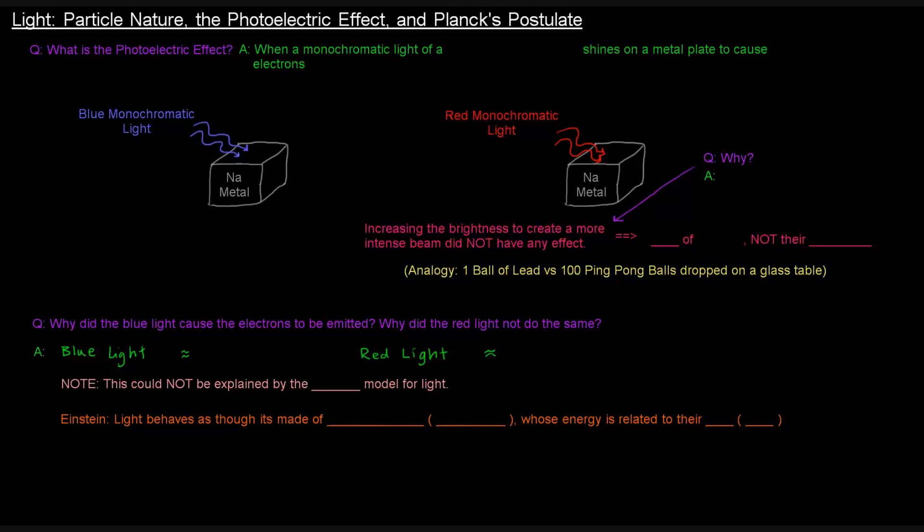What happens? When we shine the blue monochromatic light, what ends up happening is that electrons sort of fly off of this metal. Electrons are emitted. But when the red monochromatic light is shined on the metal, no electrons are emitted. And even if the brightness of the red monochromatic light is increased, there's still no electrons emitted. Why is that? That's something we'll come back to.